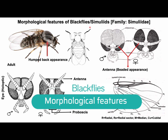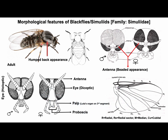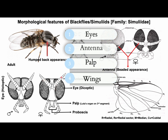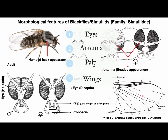Morphological features of black flies or simuliids under the family Simuliidae. Generally, black flies are small — 1 to 5 mm in length — and dark or black in color. They have a relatively stout body with a humpback or arched thorax, which is the characteristic feature of simuliids. In this slide, I'll talk about the features of eyes, antenna, palp, and the wings of adult black flies.